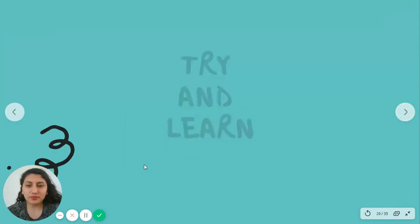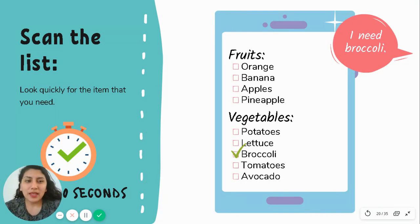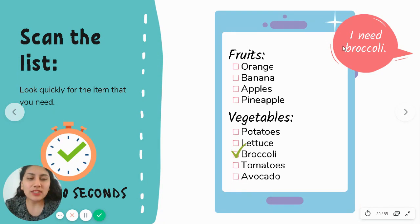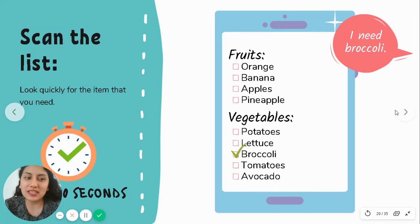We're going to practice scanning with some lists. Here's an example: the person says 'I need broccoli.' So my purpose is to look for broccoli. I have 10 seconds to scan this list. I can skip 'fruits' immediately — broccoli is not a fruit. I go to 'vegetables' and read quickly. And there it is — broccoli. That's the broccoli I need.